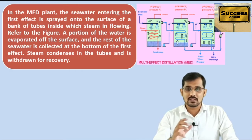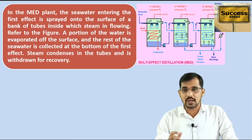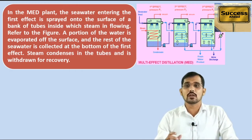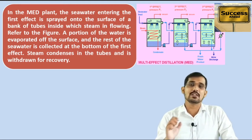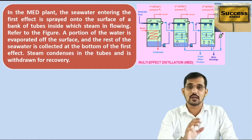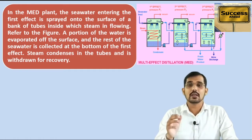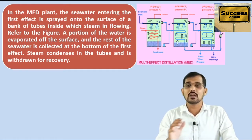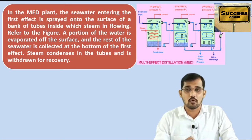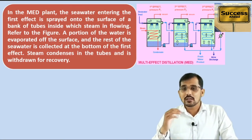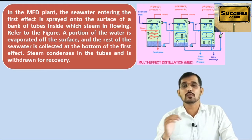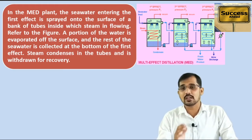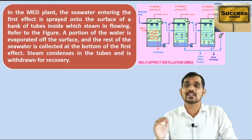Inside those tubes, steam — that is the heating source — is flowing. In the first effect, we are providing external steam as the heating source. Each effect contains a large number of tubes through which this steam flows.